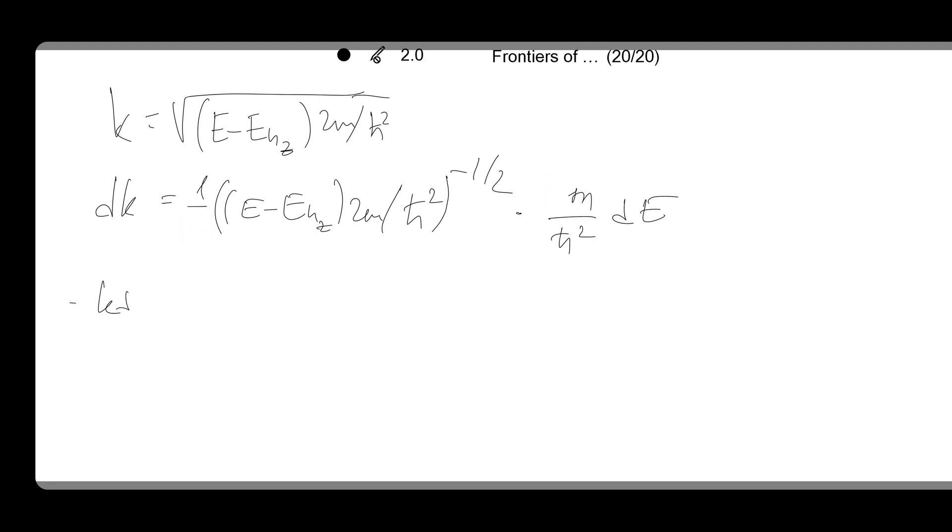The two cancel here and here. Now the k dk is basically, there are lots of cancellations here as well. Because once you multiply k by dk, these bits cancel and you end up with m over h-bar squared dE.